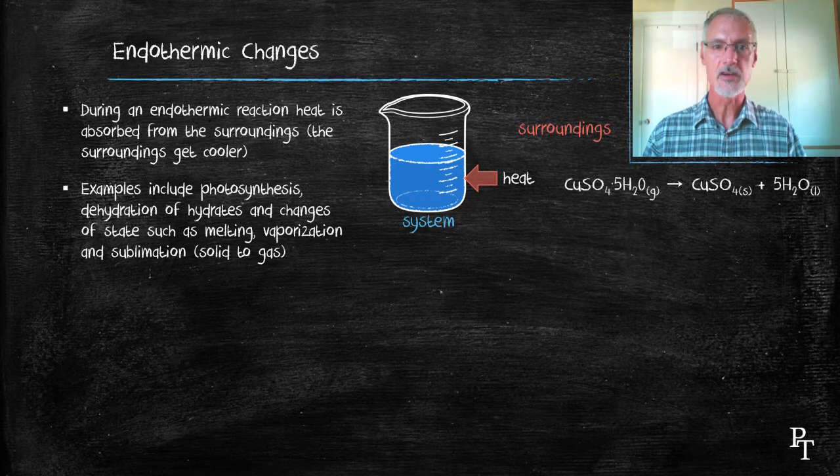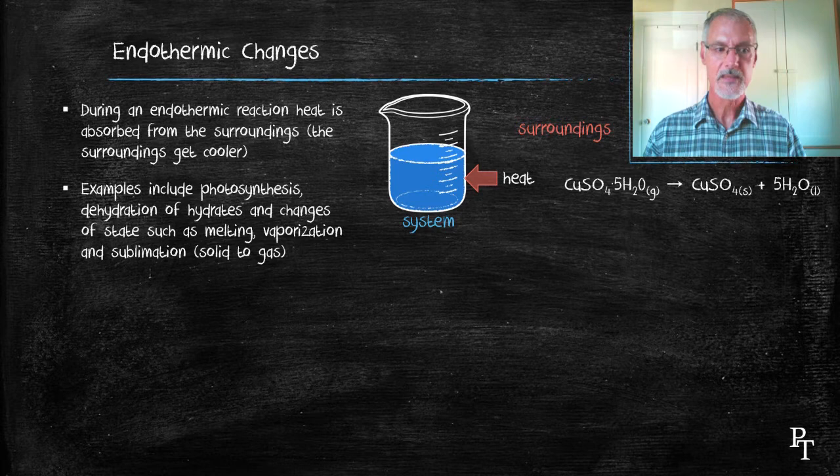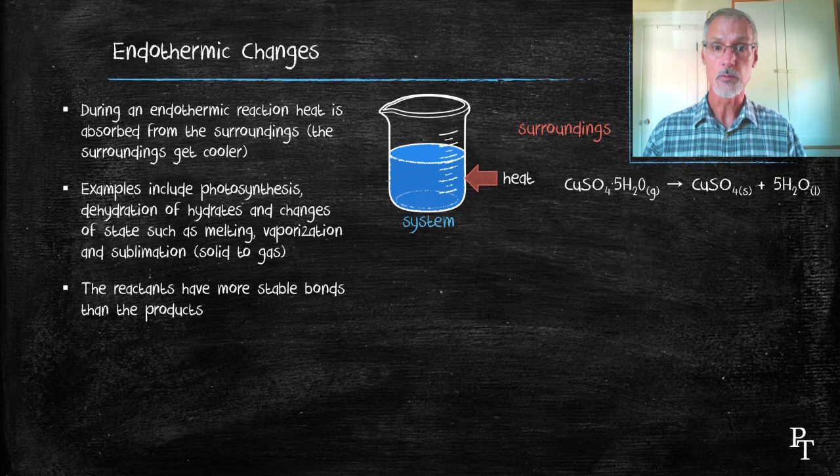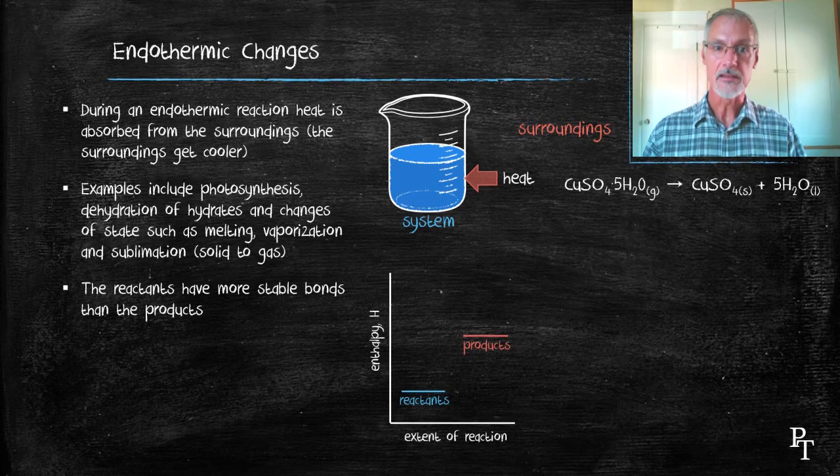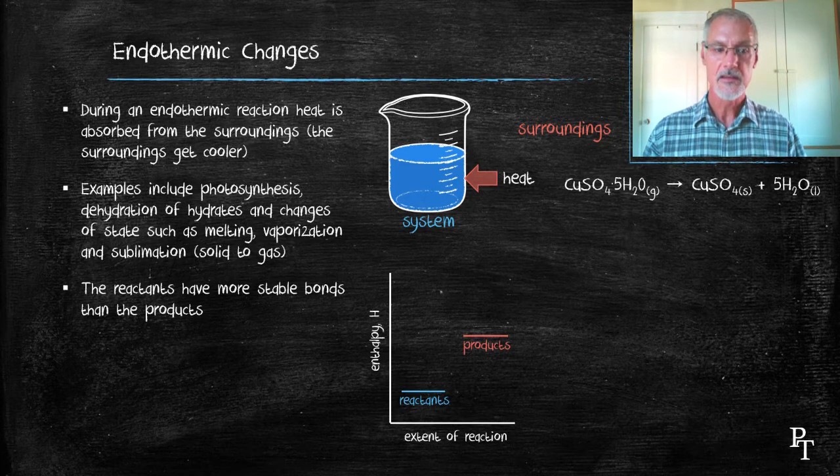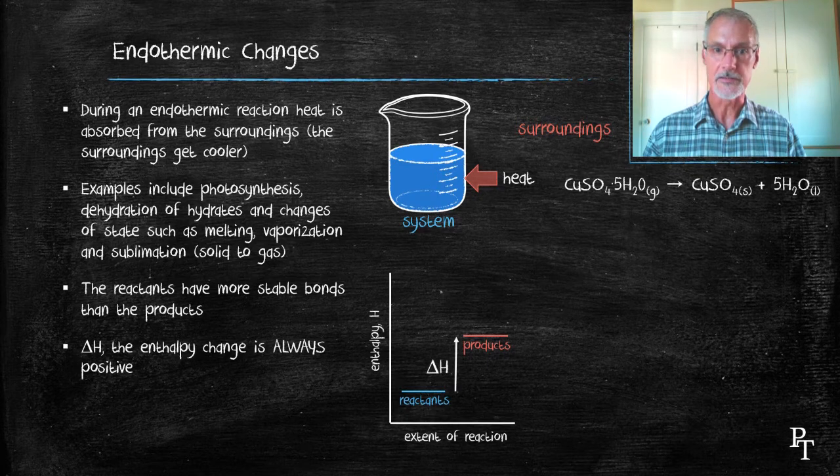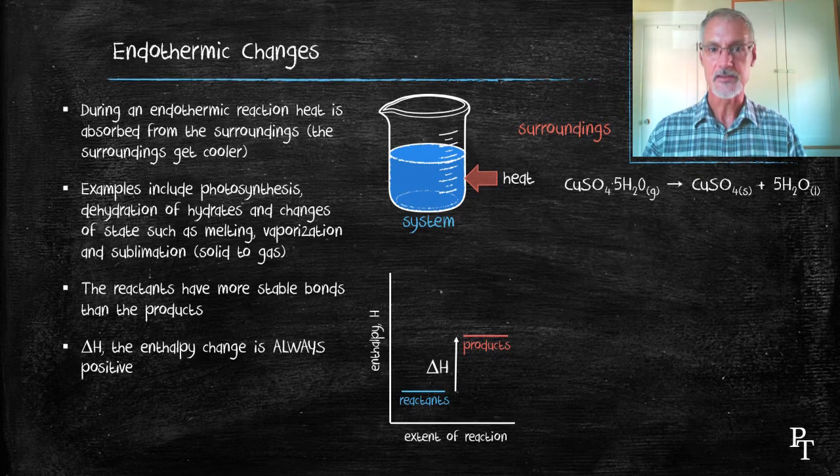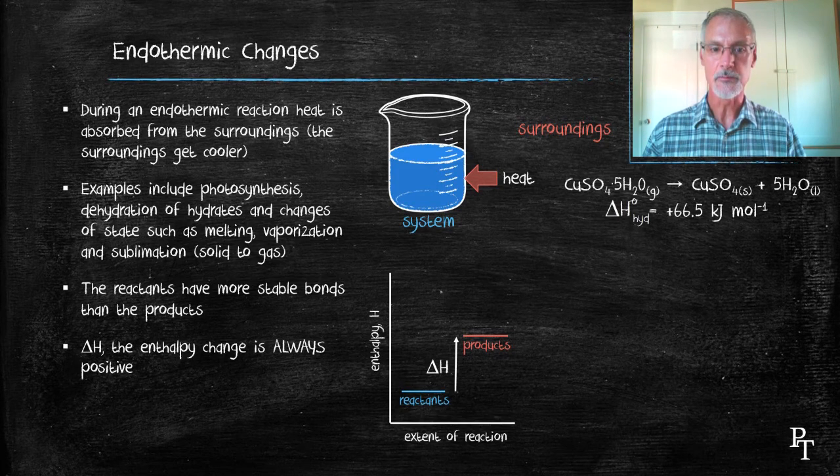Here's an example of the dehydration of copper sulfate pentahydrate. Heat is required to accomplish this reaction. In this situation, if we look at our energy level diagram, we will see that our reactants are more stable than our products. Meaning that the bonds and internal forces are at a lower state in our reactants than they are in our products. And the delta H for these reactions is always a positive value. So for the reaction that I've shown here, according to the literature, its value is plus 66 kilojoules per mole.